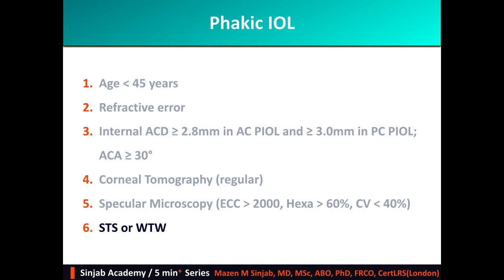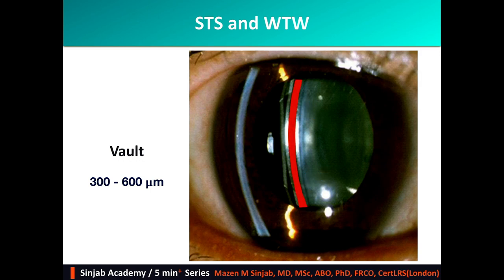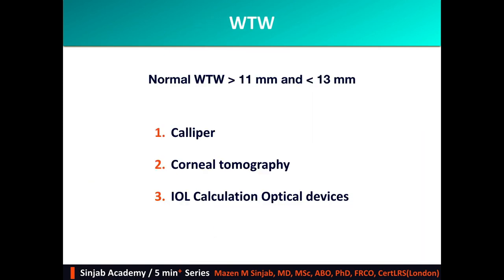The sixth point is sulcus-to-sulcus and white-to-white measurements. This measurement is very important for posterior phakic IOL implantation. The aim is to choose the most suitable size of phakic IOL that maintains 300 to 600 microns of vault — the space between the phakic IOL and the anterior surface of the crystalline lens. The average white-to-white in a normal population is between 11 and 13 millimeters, and it can be measured manually by caliper or objectively by corneal tomography or IOL calculation devices such as IOL Master and Lenstar.